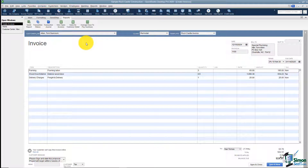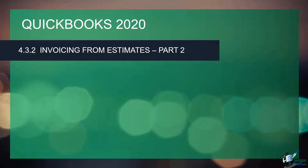That gives you a quick overview of how invoicing works. I'm going to stop the video here. We're going to go to Part Two and continue pulling everything off of that estimate into invoices, and then look at some related reports. We just created an invoice from our estimate — now we need to finish invoicing everything from that estimate and look at a couple of invoicing reports. Let's flip back over to QuickBooks and continue, because this is Part Two.